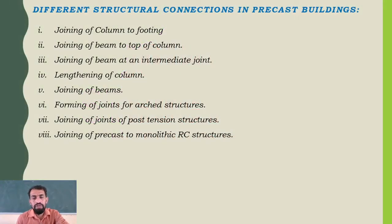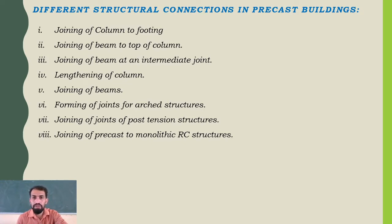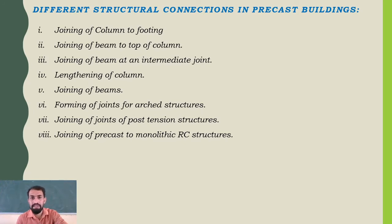We know the joints of monolithic construction, such as footing joints to column, column joints to plinth, and the plinth also has joints between walls with a damp proof course. Then the column has joints with lintels, joints with beams, and beams have joints with slabs.